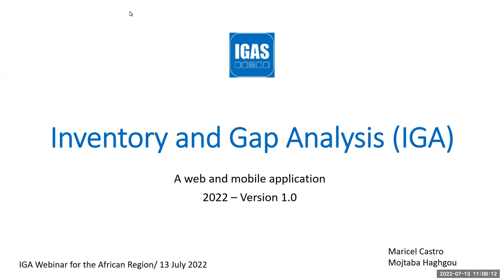Good morning, good afternoon to everyone. I will be presenting a brief introduction of the WHO Inventory and Gap Analysis Tool. The objective of this session is to summarize the potential of the EGAR tool, including its benefits for strengthening the supply chain in terms of maintaining updated equipment inventory and addressing capacity and maintenance gaps. After this presentation, we will give you a tour of the application to get you familiar with the different functions of EGAR.